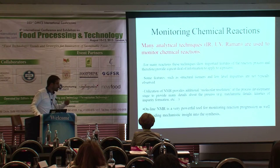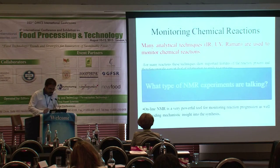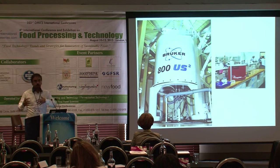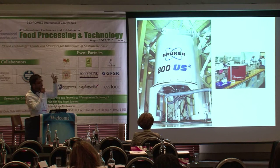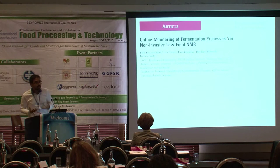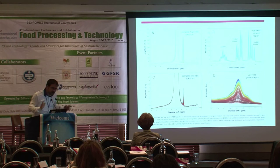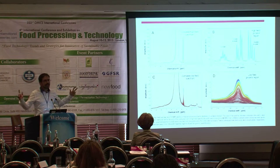Online NMR is a very powerful technique for monitoring reaction progression, as well as providing mechanistic insight into the synthesis. We're talking about large 800 MHz or 400 MHz systems which chemists typically use for spectroscopy. There is also a one Tesla instrument that can be used for NMR spectroscopy experiments. In food science, NMR spectroscopy is used to monitor fermentation processes via non-invasive low-field NMR — involving obtaining the spectrum, applying Fourier transform, using chemical shifts, and obtaining chemical information.